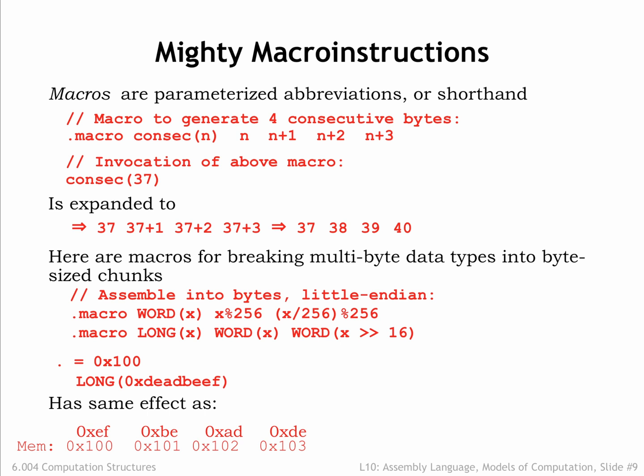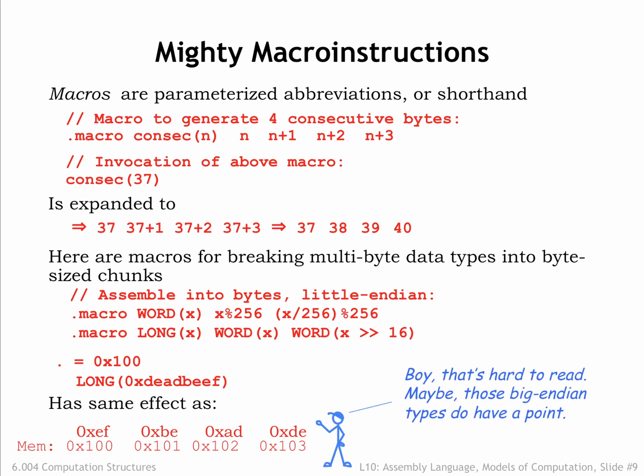There is a symmetrical big-endian convention where the most significant byte comes first. Both conventions are in active use and, in fact, some ISAs can be configured to use either convention. There is no right answer for which convention to use, but the fact that there are two conventions means we have to be alert for the need to convert the representation of multibyte values when moving values between one ISA and another.